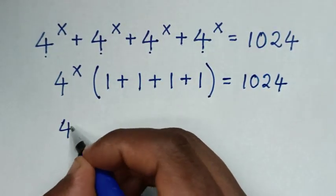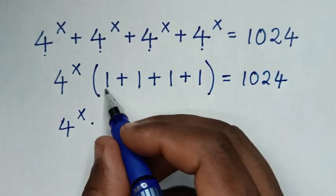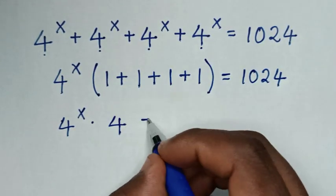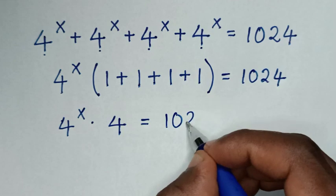Then it will be 4^x times (1 + 1 + 1 + 1), which is 4. So 4^x times 4 equals 1024.